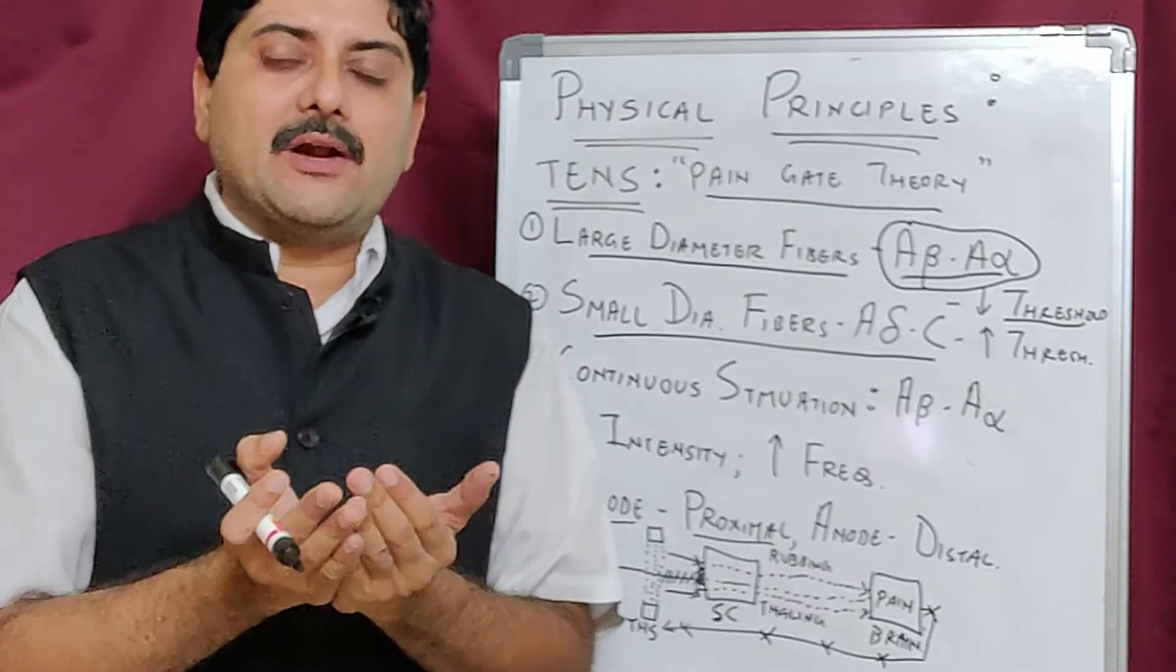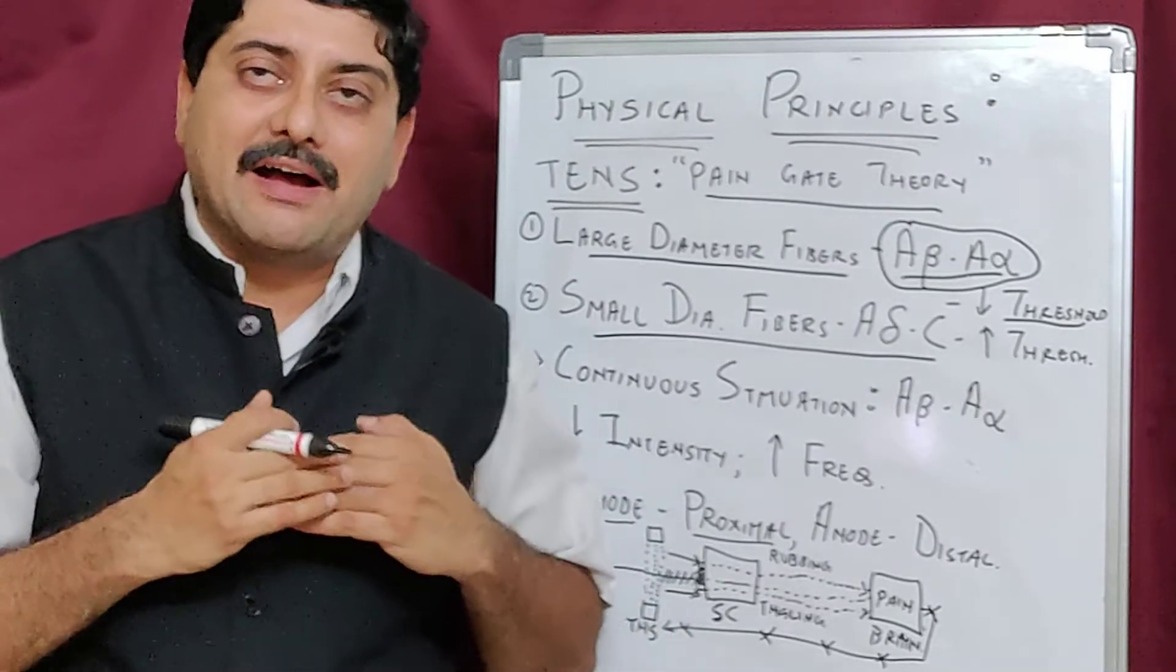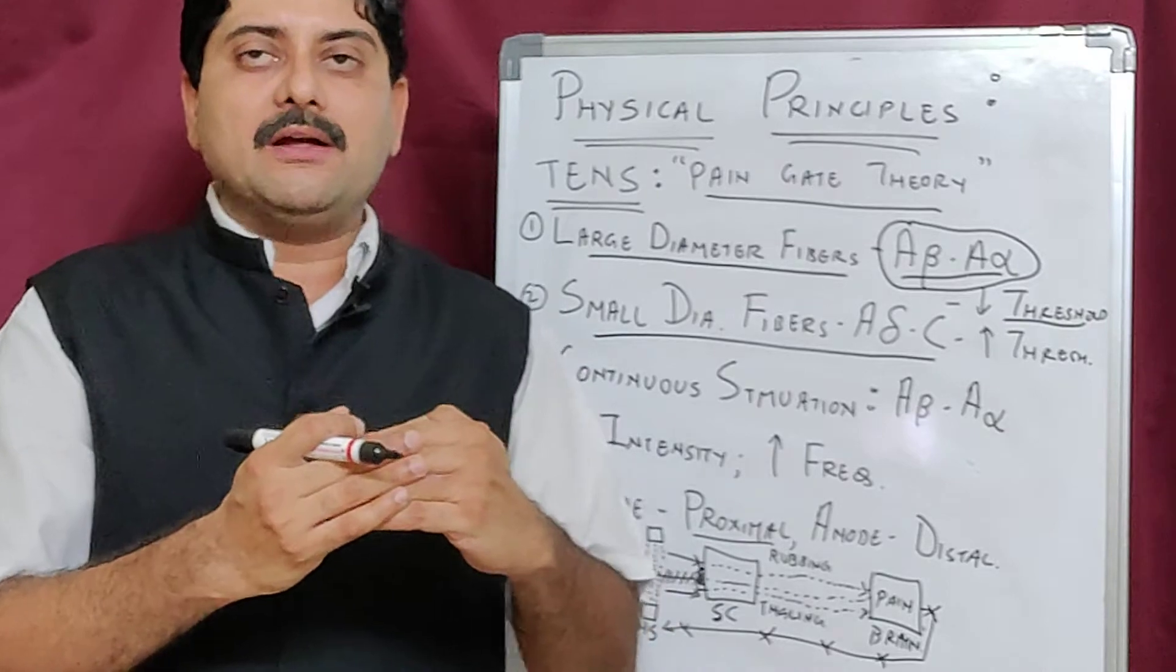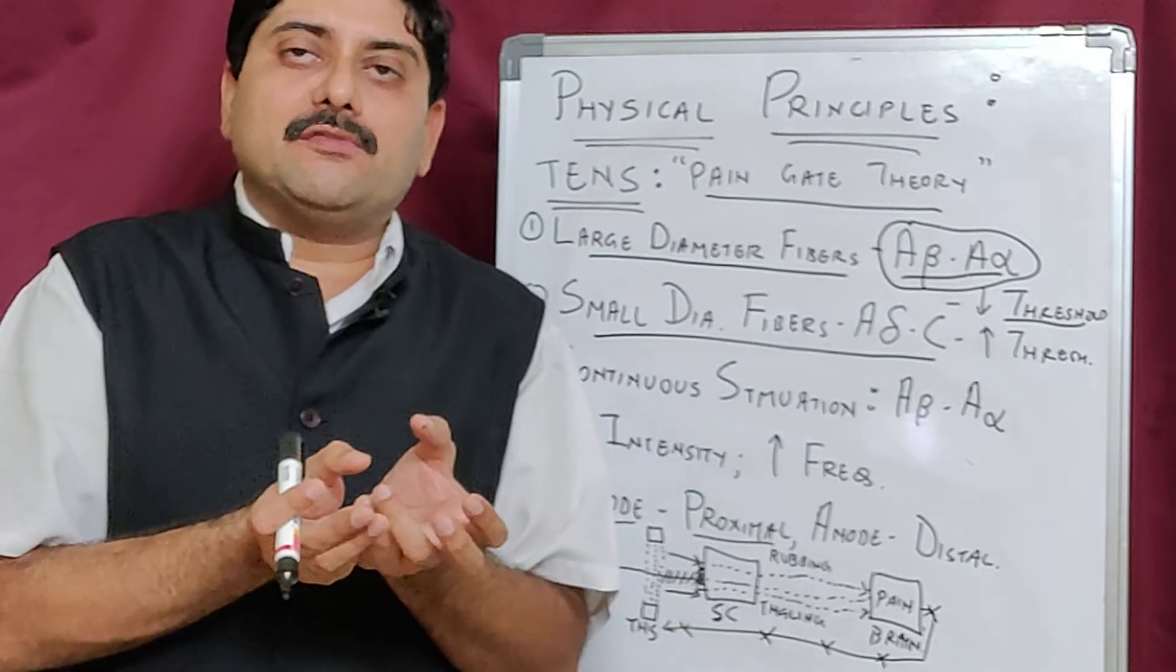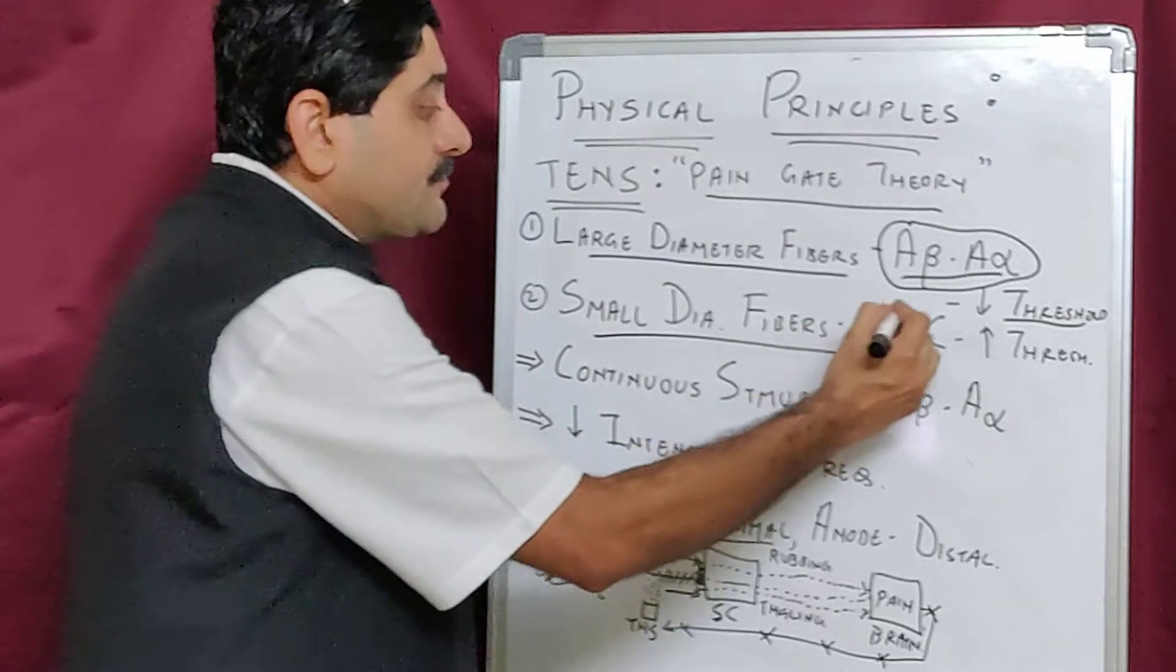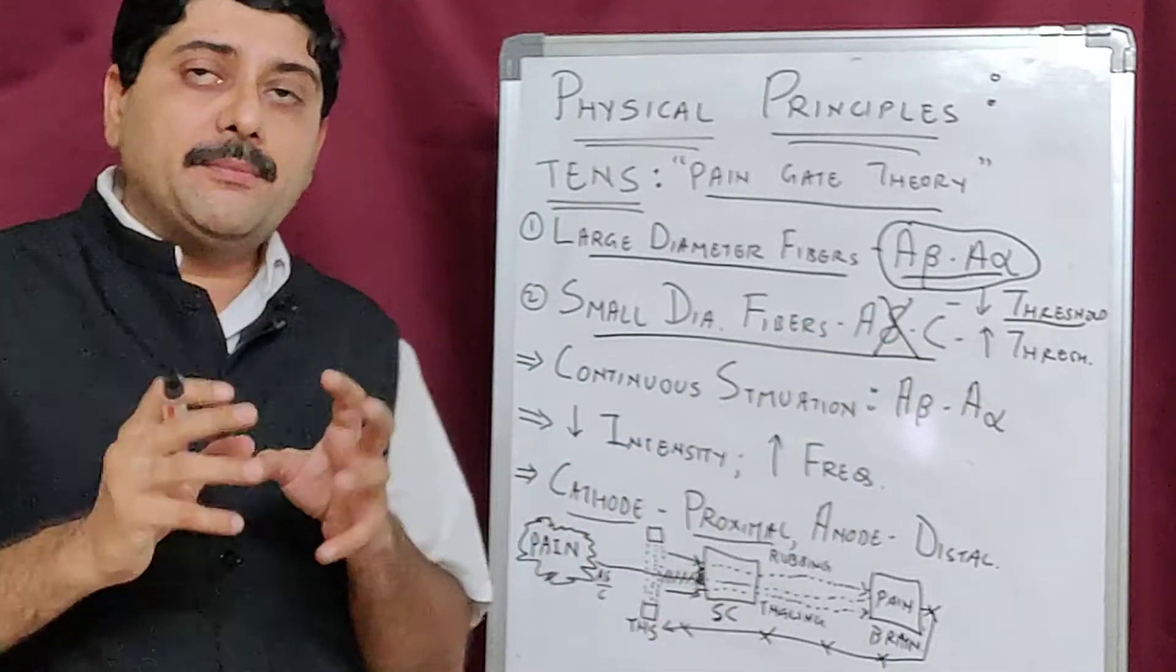When they go and crowd at the spinal cord, they are faster received by the spinal cord. Once they attach to all the receptors on the first order neuron, they do not allow the sensation from A-delta and C fiber to cross.